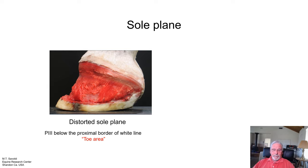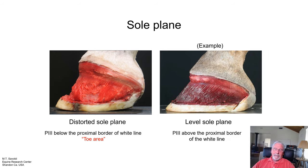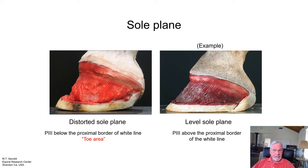Let's go back to the distorted sole plane. The P3 bone is below the proximal border of the white line in the toe area. If we set a goal, our goal could be to try to level the sole plane — because once you get it, it's going to be a different foot. The reason this foot is short in the toe is because bone is demineralizing, and if bone is demineralizing, the foot's going to get shorter.